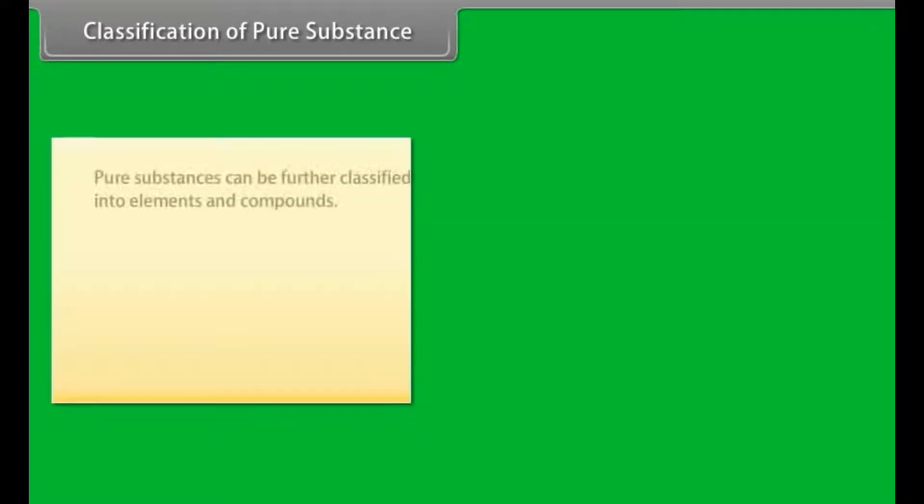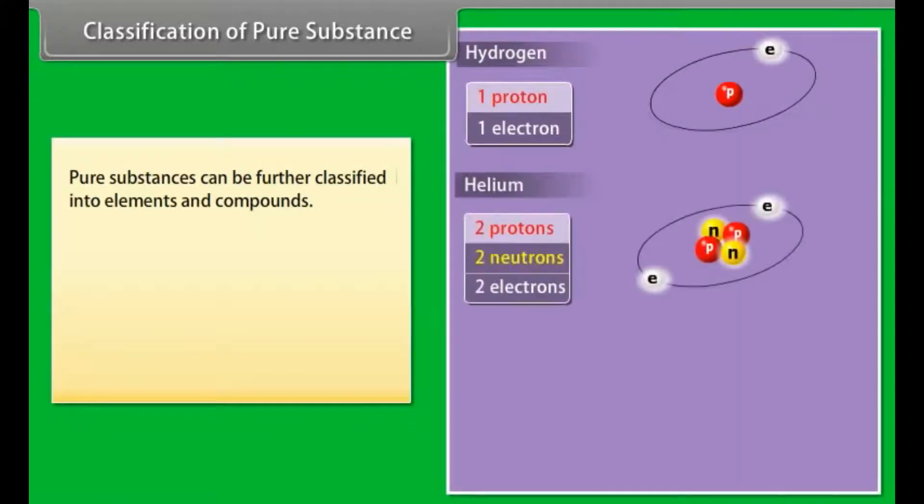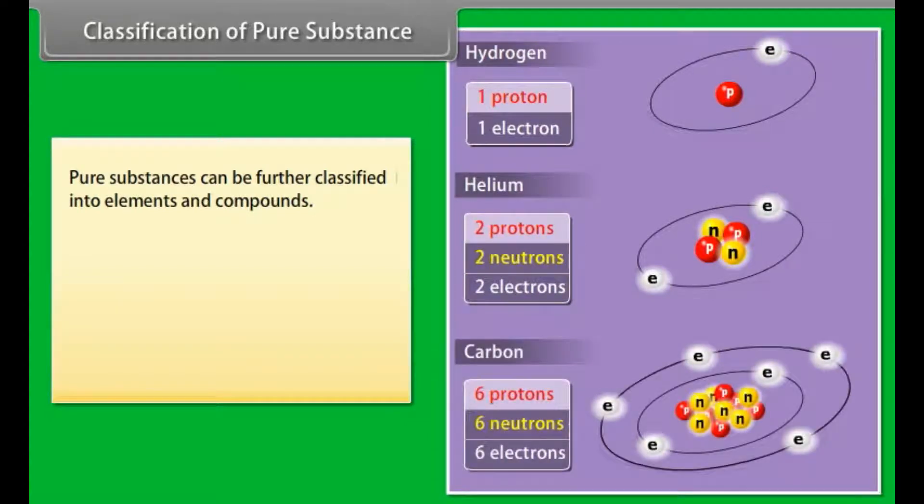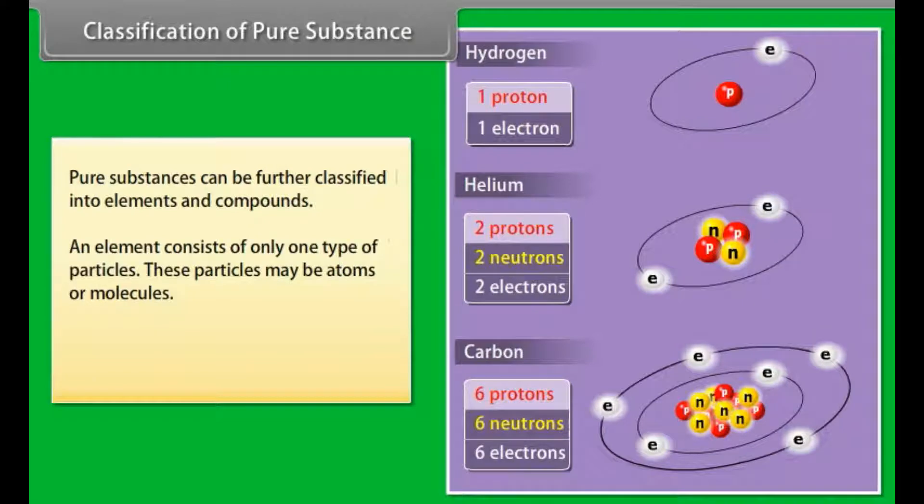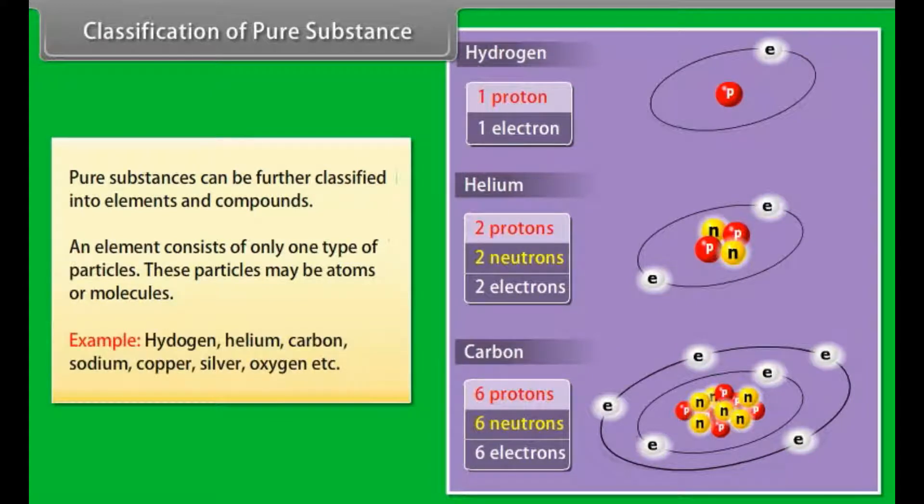Classification of Pure Substance: Pure substances can be further classified into elements and compounds. An element consists of only one type of particles. These particles may be atoms or molecules. Examples: hydrogen, helium, carbon, sodium, copper, silver, oxygen, etc.